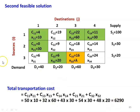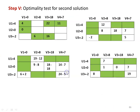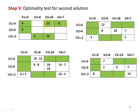We now check the optimality of the second solution. Setting V1=0, we find the UV values for all allotted cells: U1=4, U2=0. With U1=4 and cell value 22, V3=18. With V3=18 and cell value 16, U3=−2. With U3=−2, V2=8, and V4=7.